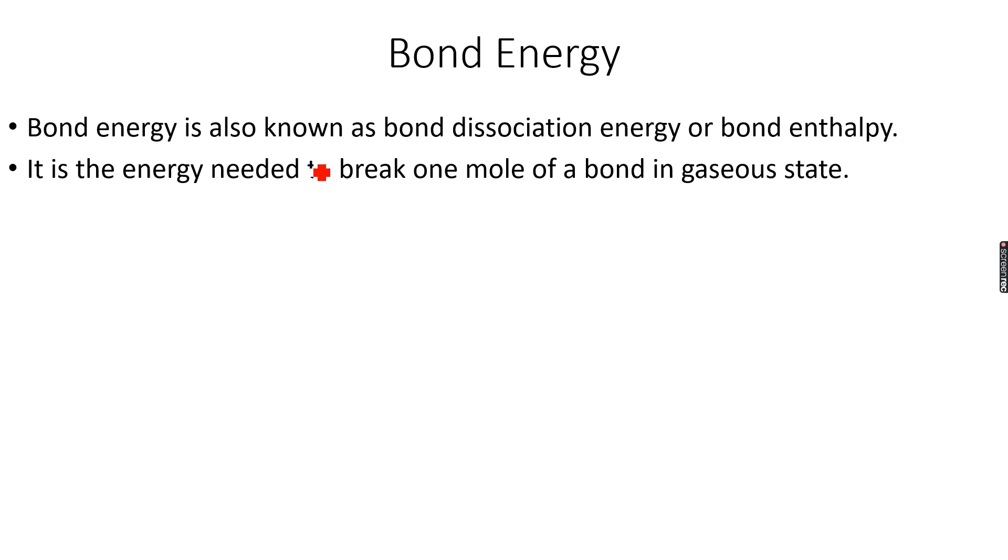Now, how do we calculate, how do we use bond energies to calculate enthalpy changes? Let's see. Now, let's say we have this reaction CHO plus O2 gives CO2 plus 2H2O. So this will be 2 over here.